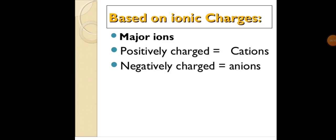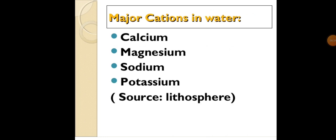Based on ionic charges, there are two types: positively charged, that is cations, and negatively charged, that is anions. Major cations in water are calcium, magnesium, sodium and potassium. Their source is the lithosphere.